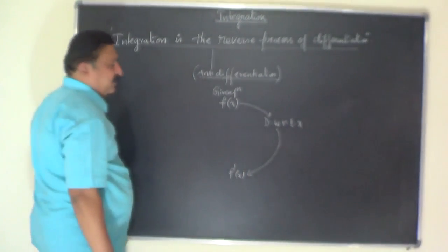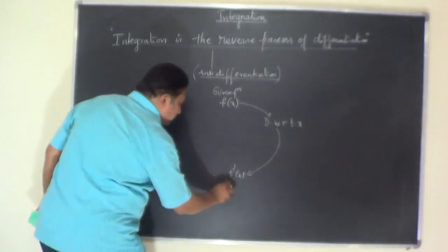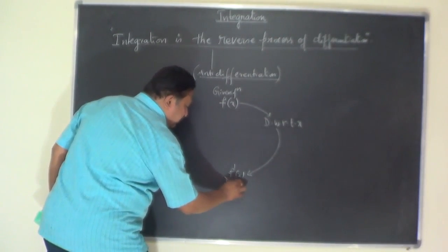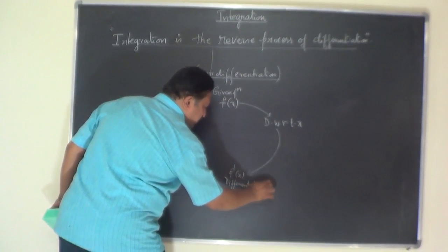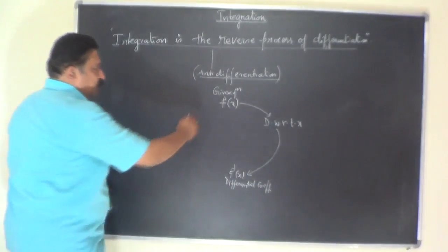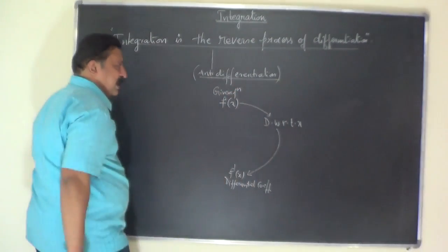The differential coefficient of f of x is f dash of x. So this is the DC of the function or the differential coefficient of f of x. Now till this part we are in differential calculus.